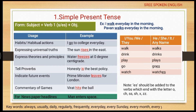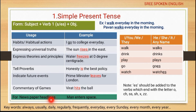For every tense we have keywords, and on the basis of these keywords we can identify the tense. The simple present tense keywords are: always, usually, daily, regularly, frequently, every day, every Sunday, every Monday, every month, every year, every week.